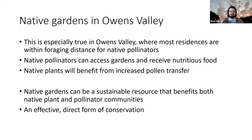This can be a sustainable resource that benefits both plants and pollinators. It's one of the most effective, easy, and direct forms of conservation you can do at a local scale. By having a native garden, you can benefit both native pollinators and native plants, and help create a sustainable natural environment surrounding your homes in Owens Valley.